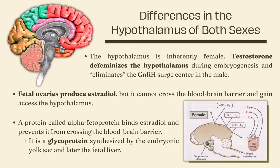Before we proceed to the subject of puberty, let us understand there are fundamental differences in the hypothalamus of both male and female. The hypothalamus is inherently female. Testosterone defeminizes the hypothalamus during embryogenesis and eliminates the gonadotropin-releasing hormone surge center in the male. During prenatal development in the male, testosterone from the fetal testis defeminizes the brain. The female fetus has no testis to produce testosterone, so it develops a gonadotropin-releasing hormone surge center in the hypothalamus.